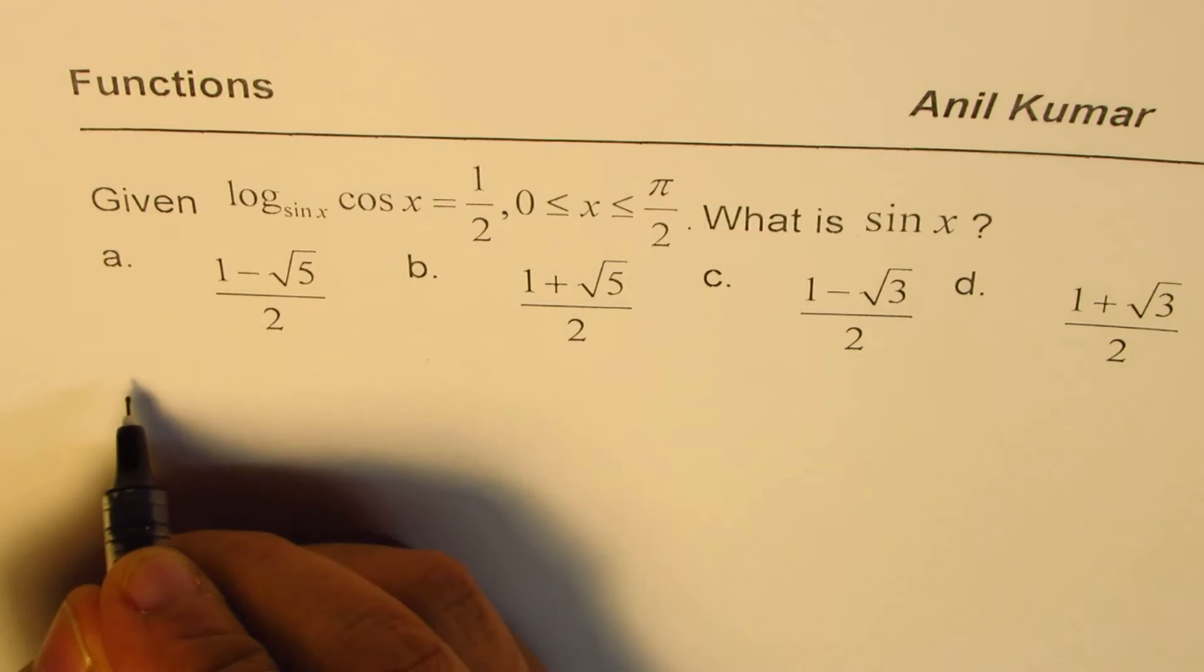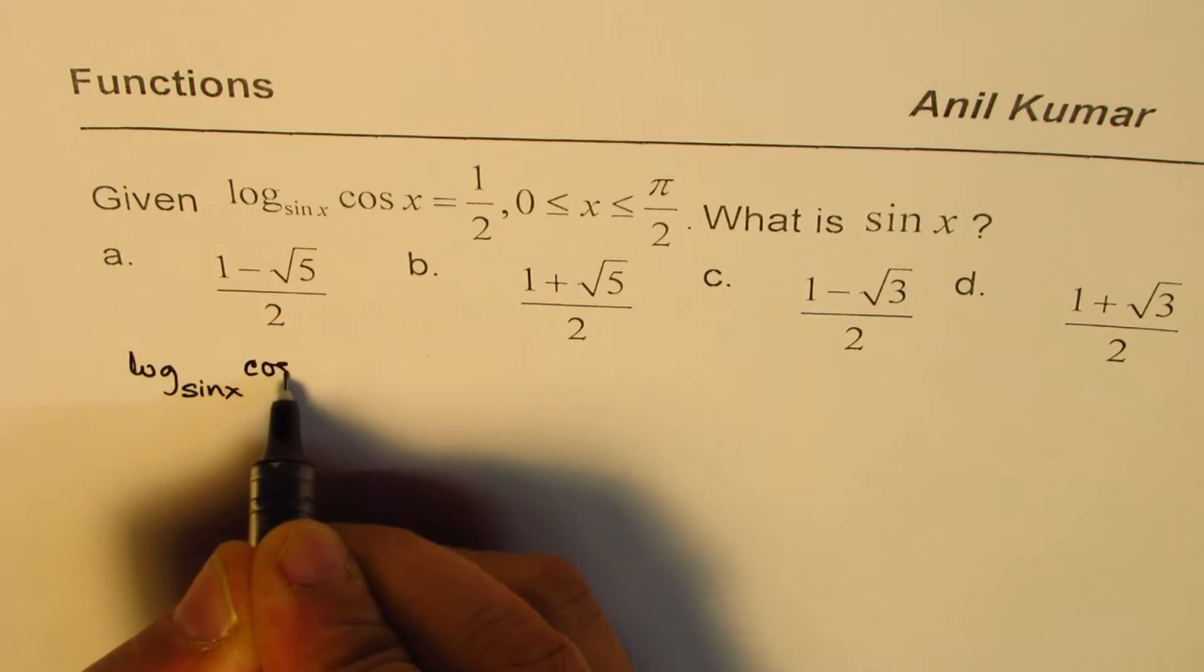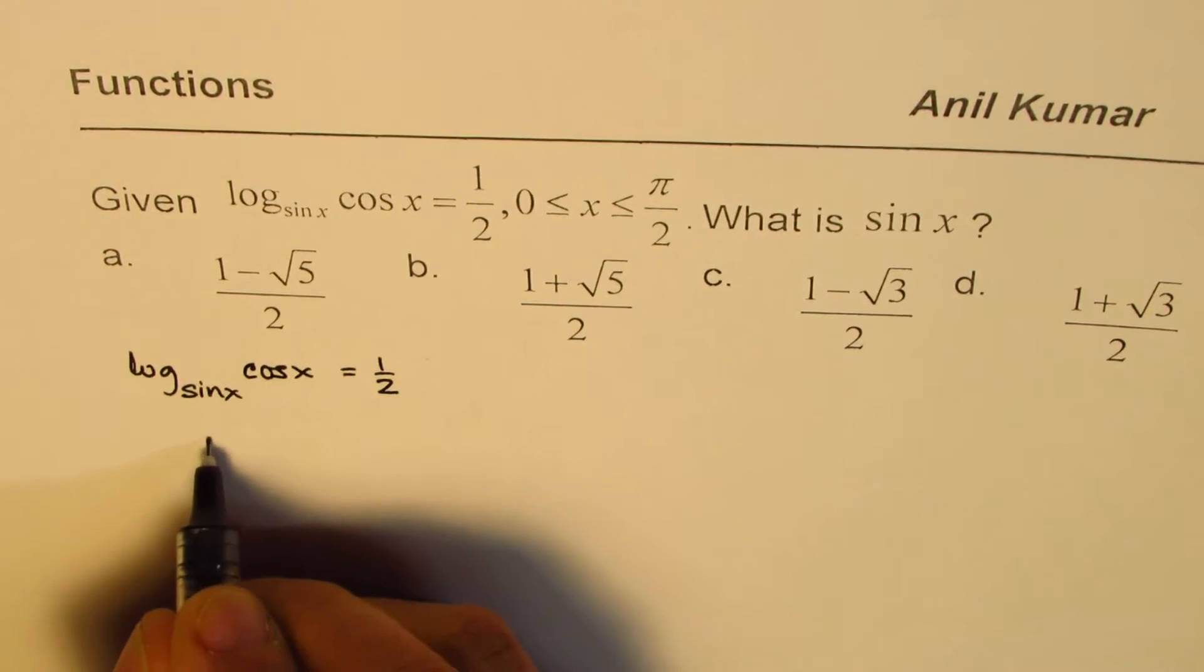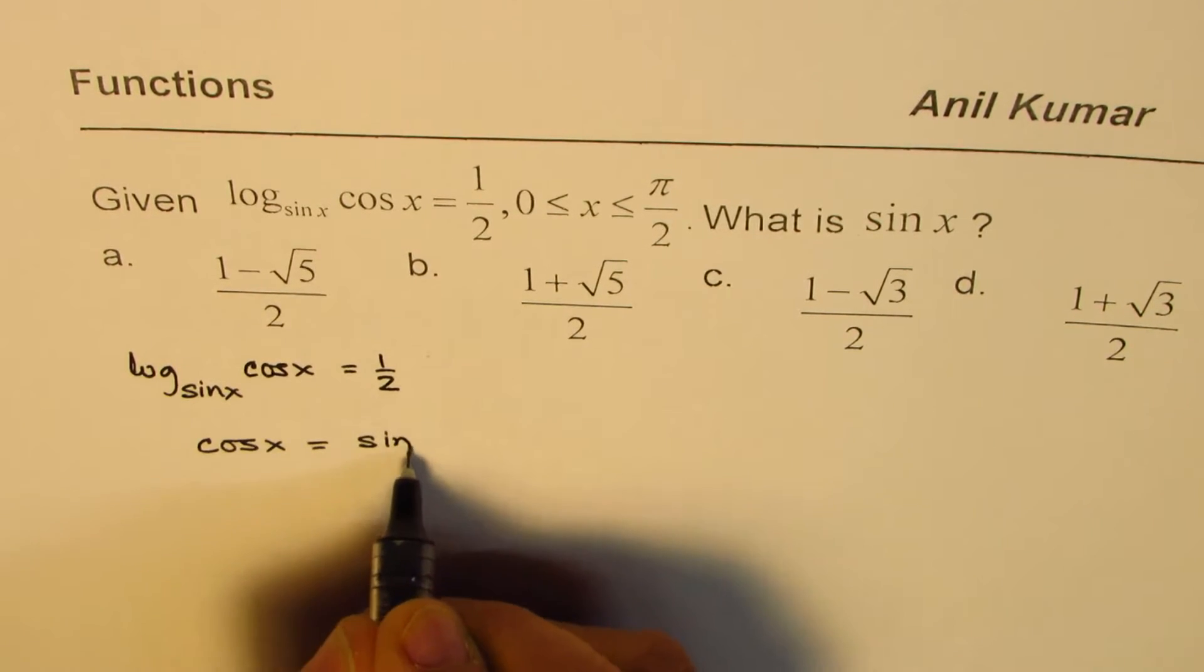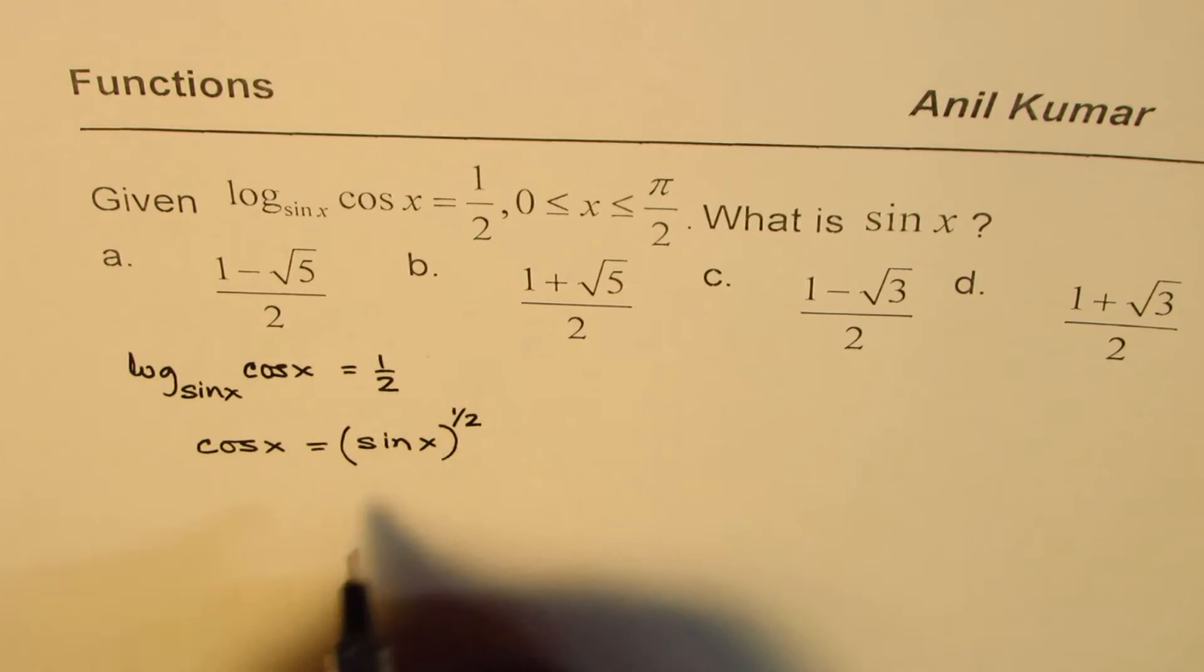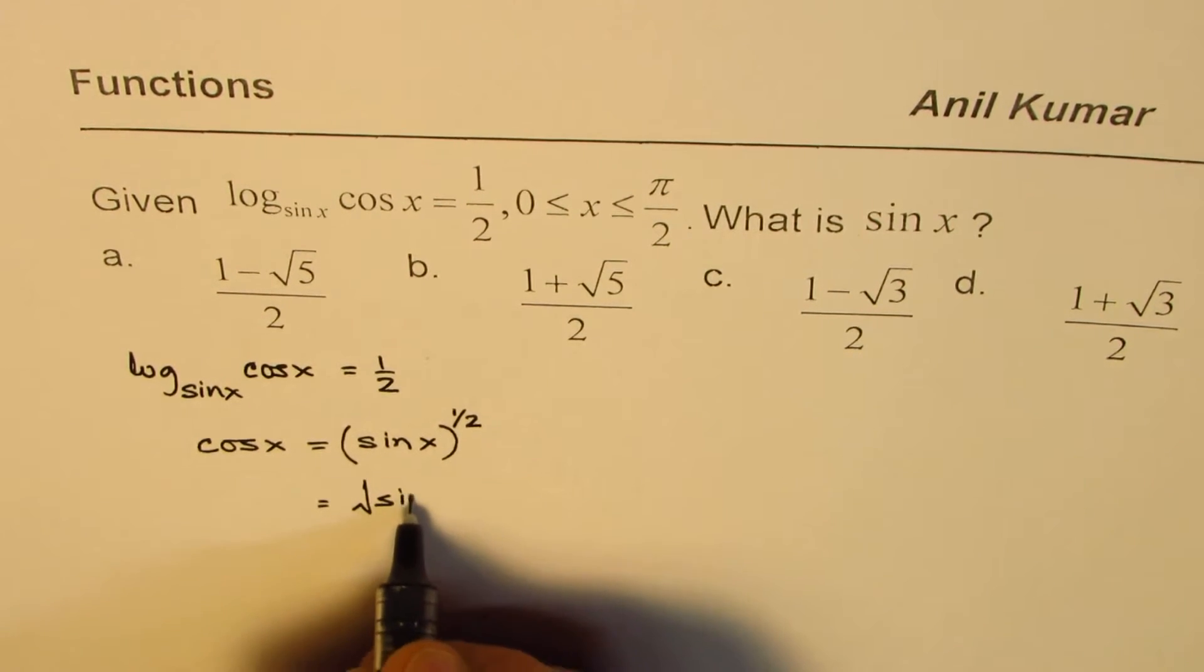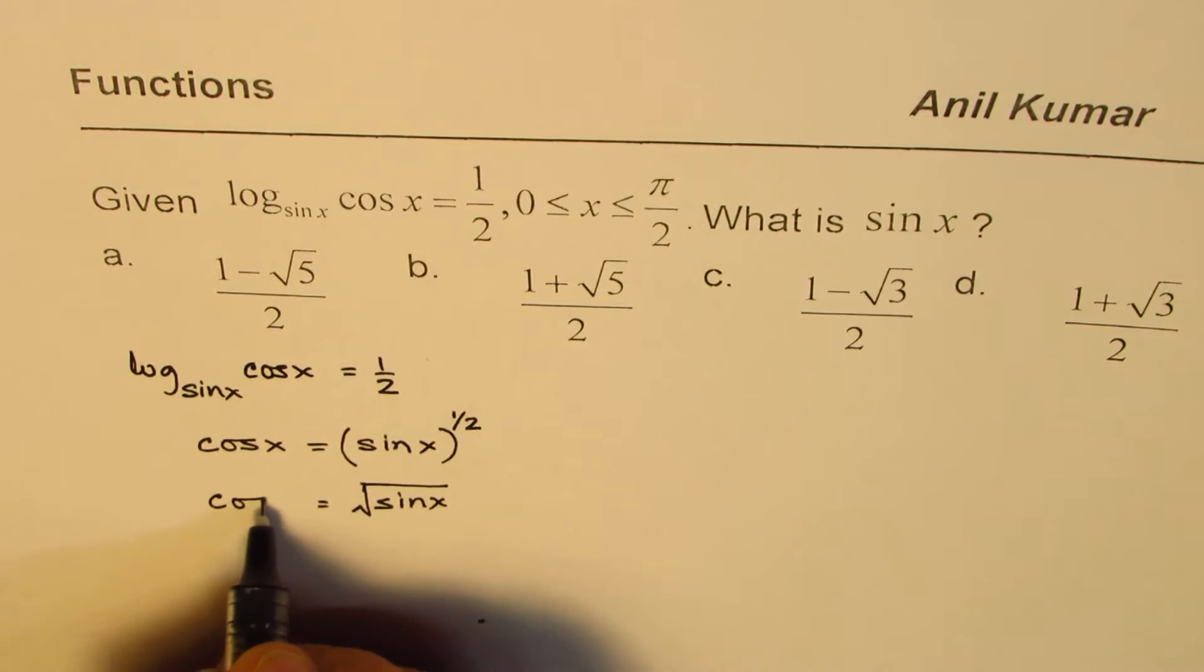Now let's try to solve this equation. We have log to the base sine x of cos x equals one-half. From here we can write cos x equals sine x to the power of one-half. That is the square root of sine x.